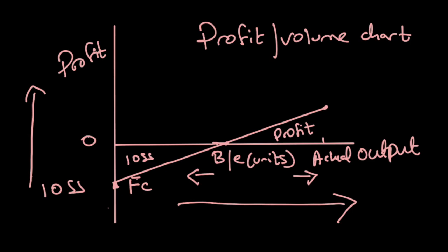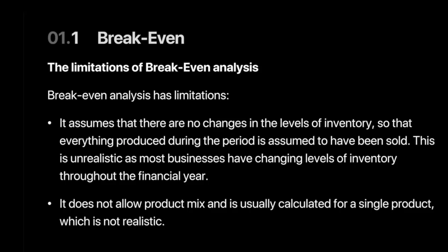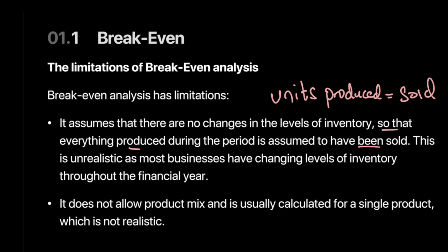Let's also look at some of the assumptions and limitations of marginal costing. The first assumption is that all units produced will be sold — so there is no inventory, no changes in inventory. That's a big assumption. Secondly, we're not allowing for any product mix — we're calculating this for a factory with a single product, but in reality a factory would have multiple products.